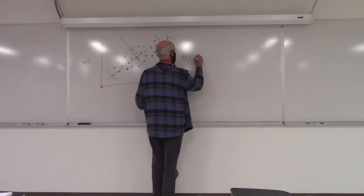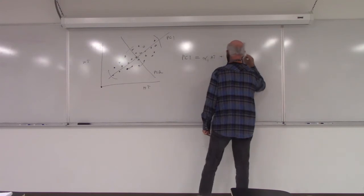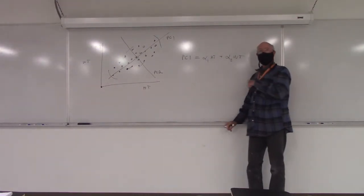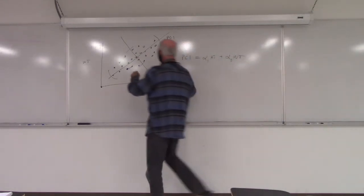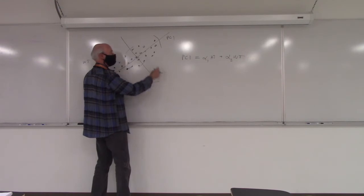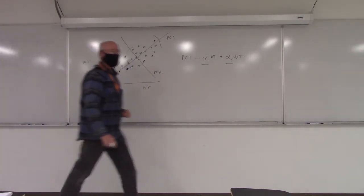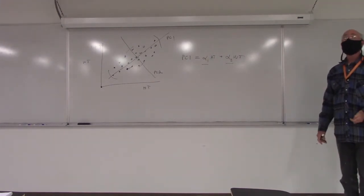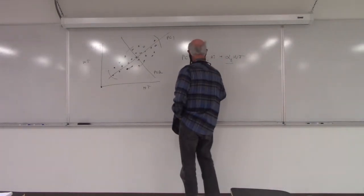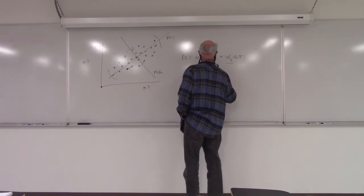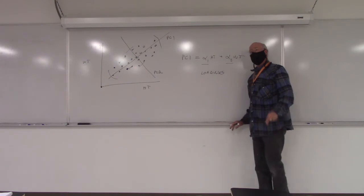PC1 is equal to alpha times height plus alpha1 times height plus alpha2 times weight. So, each principal component is a linear combination of the original variable. And the stronger the correlation between that axis and height or that axis and weight is going to be reflected in those alpha1s and alpha2s. The alphas are referred to as coefficients. They're kind of like a correlation. Sometimes we refer to them as loadings. And if you were doing factor analysis, they would be factor loadings.